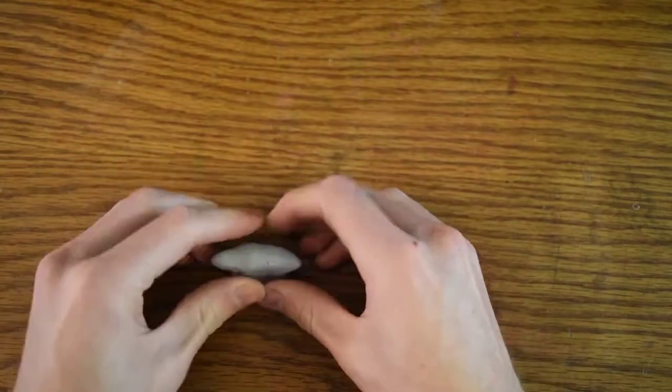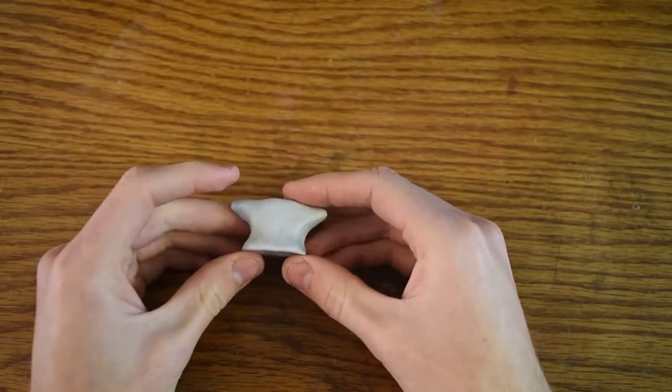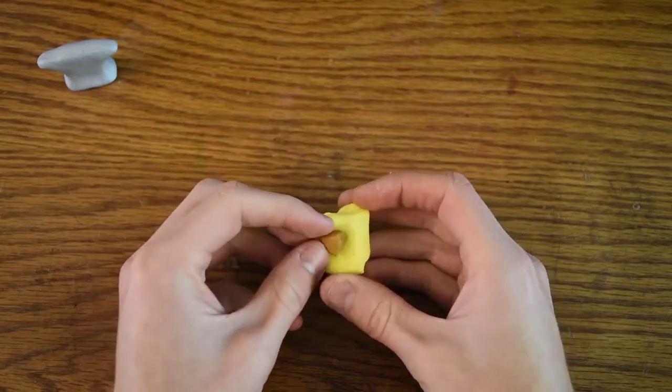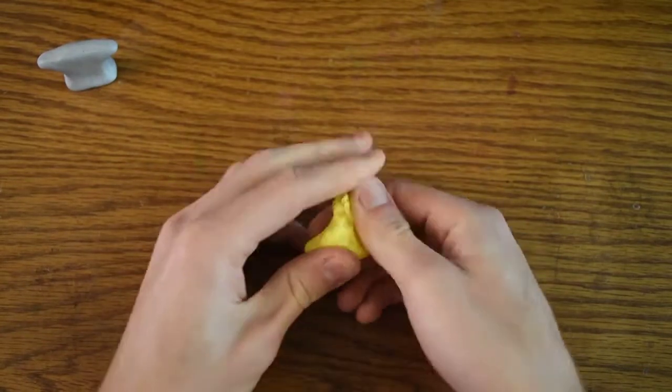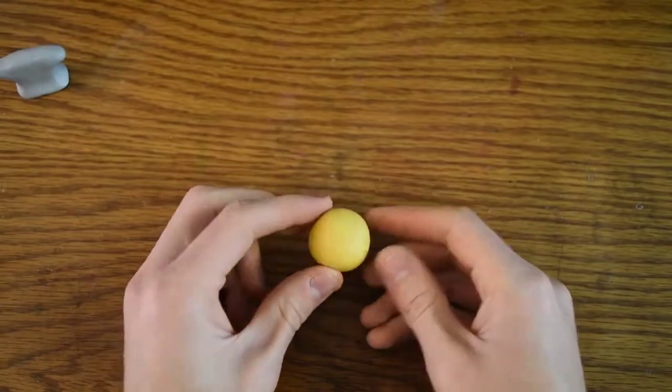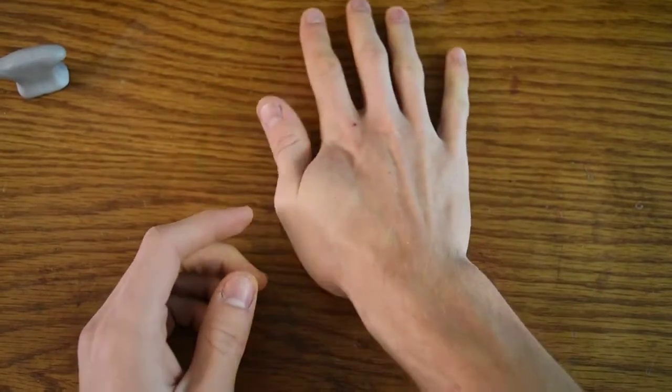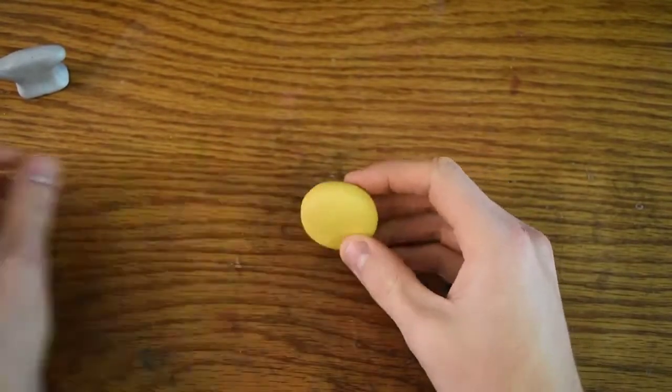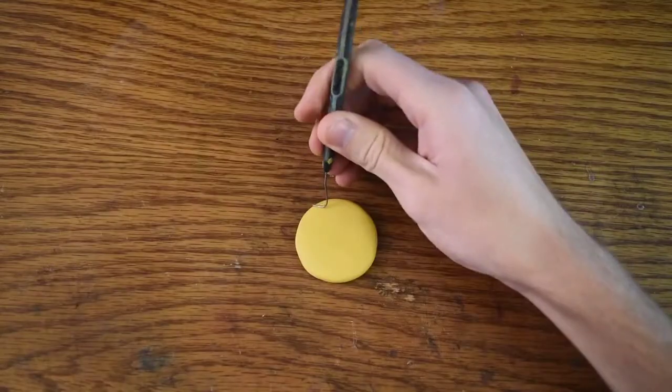Now we can move on to creating the head, which is golden. I find that the gold out of the pack is way too dark, so I always mix it with yellow. This looks a lot nicer now. Let's check the size - that looks pretty good, so let's move on to creating the hexagon.